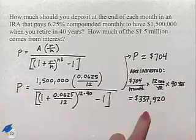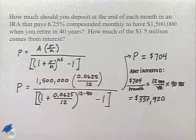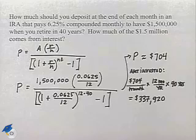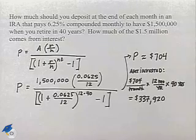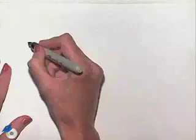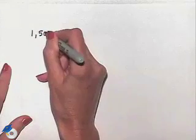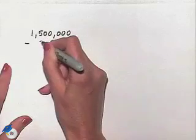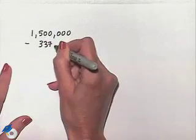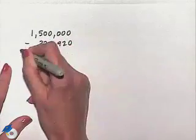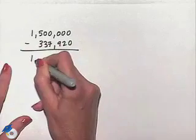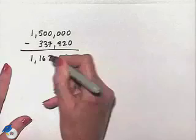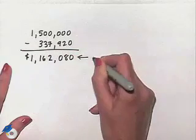Now, that's how much we invest. And remember that at the end of this, we end up with $1.5 million. So how much of this amount is coming from interest? We're going to take the $1,500,000. We're going to subtract from it the amount we invest over that time period. And we come up with a difference of $1,162,080. All of this amount is interest.